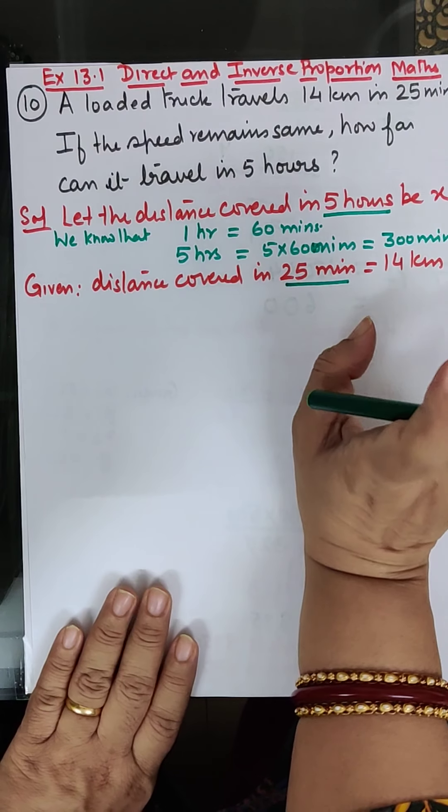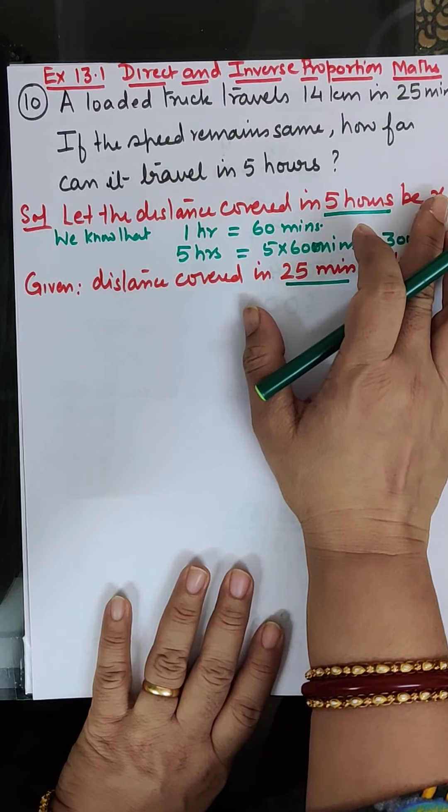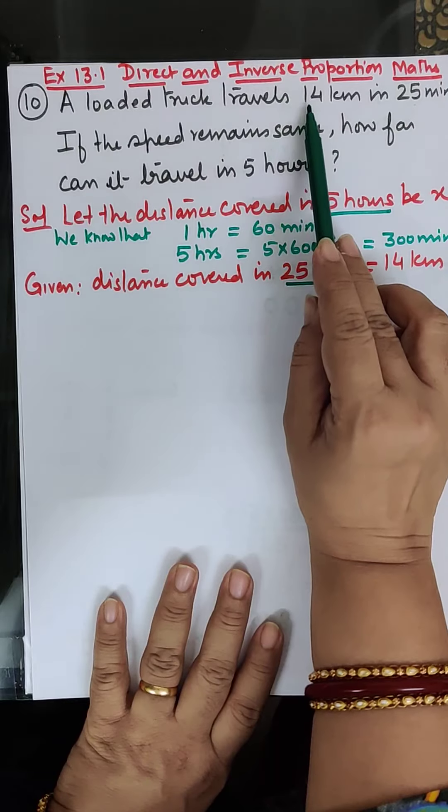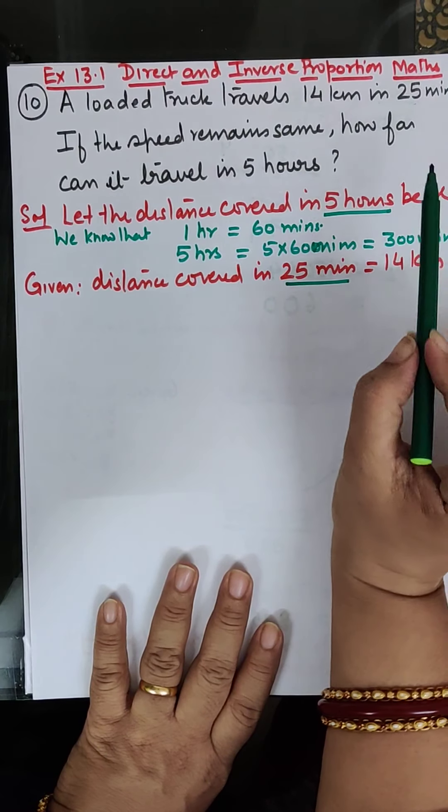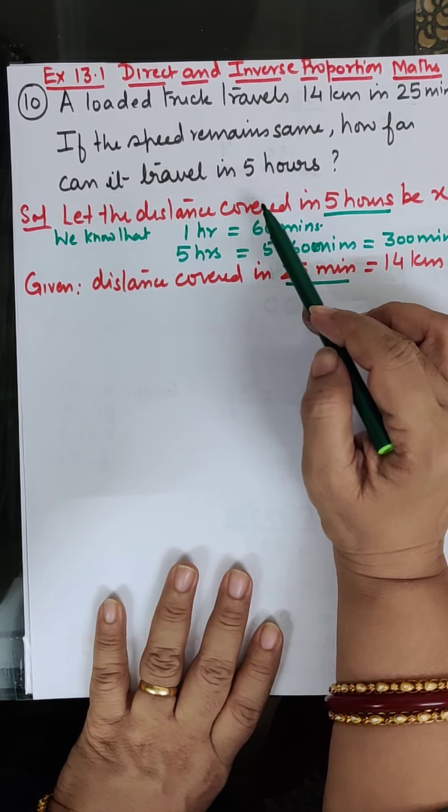Now, let's check if the question is direct variation or inverse variation. Let's see, if we can travel in 25 minutes 14 kilometers, then 300 minutes will be more travel.